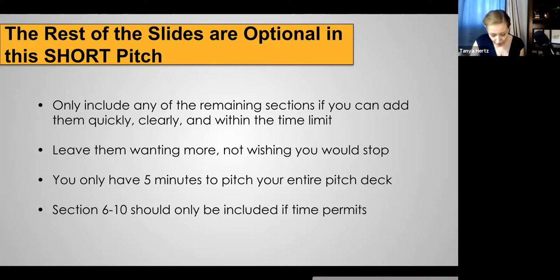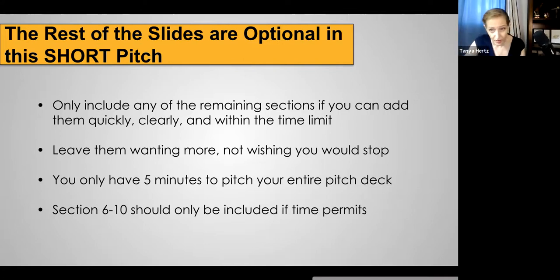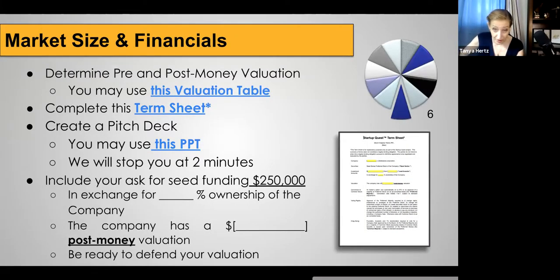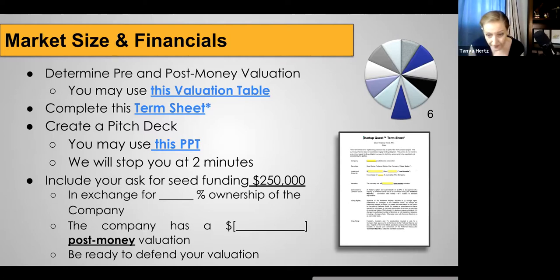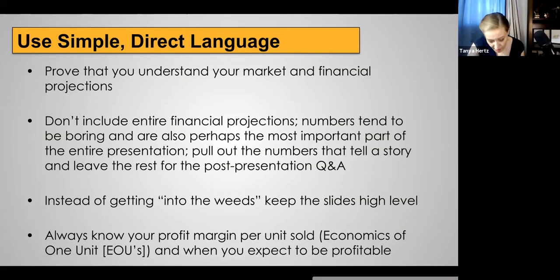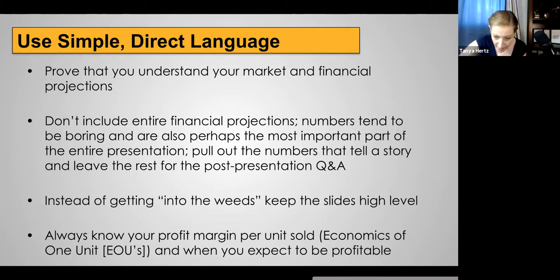The rest of the slides and sections are optional. Leave them wanting more and not wishing you would stop talking — you only have five minutes. Slides six through ten in the 10 common slides are optional. Include as many as you can, including market size and financials. The reason I say this is optional is that for this particular project, you probably don't have any numbers yet. Everything you include needs to be validated, so if you don't know it yet, you might not include it. But if they say they want it, put it in.